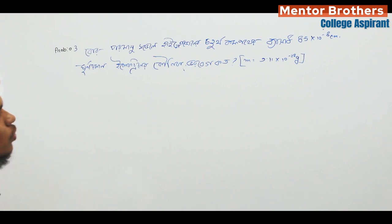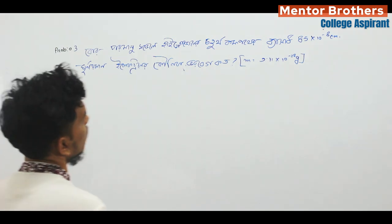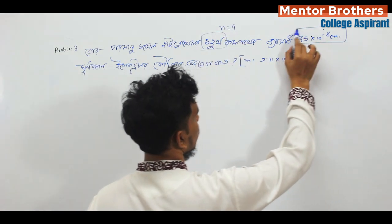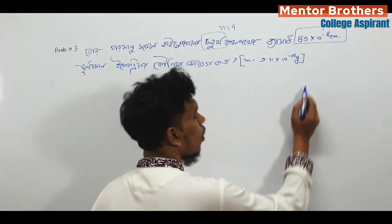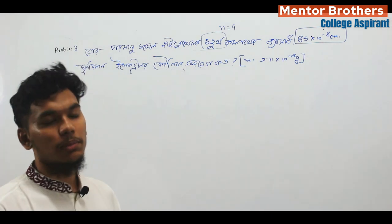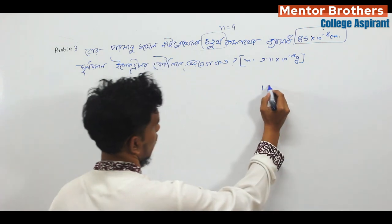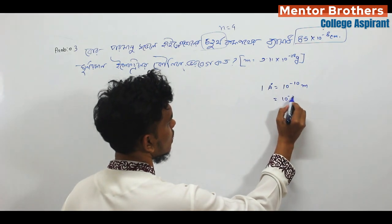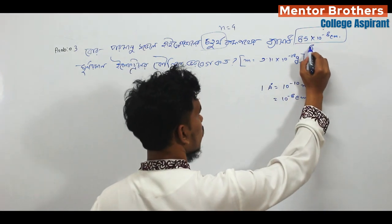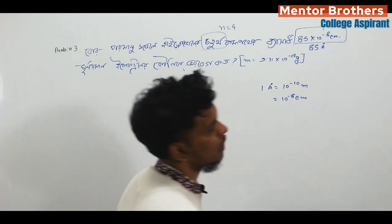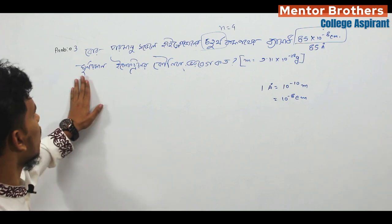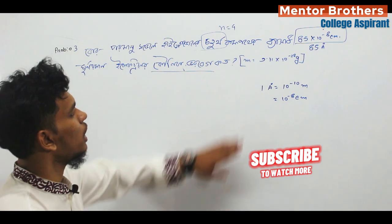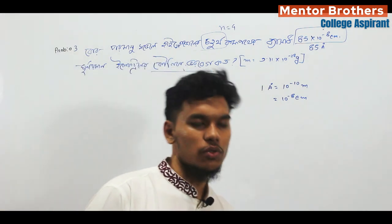So let's see, 1.4 is equal to 4, then 8.5 into 10 to the inverse of 8 cm. 1.5 into 10 to the inverse of 8 cm. Sometimes we have a push rate of 8.5 into 10 to the inverse of 8 cm. The most important model of hydrogen is 9.11 into 10 to the inverse of 28 grams.